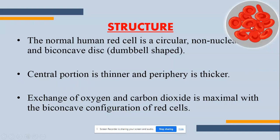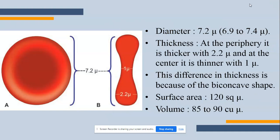Exchange of oxygen and carbon dioxide is maximum with this biconcave configuration of the red blood cells. Because of this proper structure, gaseous exchange takes place very effectively. As you can see in this diagram, the central portion is thin, having 1 micron in thickness, and the outer periphery portion is the thickest part. The diameter of RBC is 7.5 microns; at the periphery it is thicker at 2.2 microns, and in the center it has a diameter of 1 micron thickness.